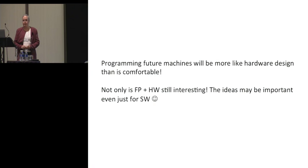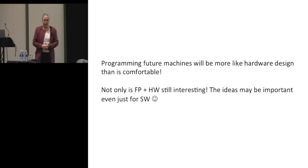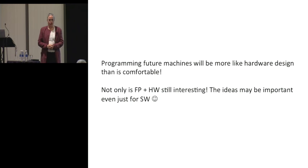Question: My graduate work was on lower bounds for parallel computation, and at the time the big result was the AKS log-depth sorting network. I'm wondering if you ever thought about that messy complicated result and how one might use FP to simplify these ideas — not just get the constants down, but also log-depth networks, which seem harder than log-squared depth. Answer: I have not really thought about that.